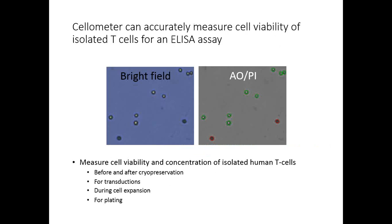In this example, the cellometer is used to measure cell viability of isolated T cells. Because the sample is isolated and very clean, we can use just a bright field cell counter with trypan blue staining to measure concentration and viability. This can be done before and after cryopreservation, for transduction measurement, during cell expansion, and also for plating.